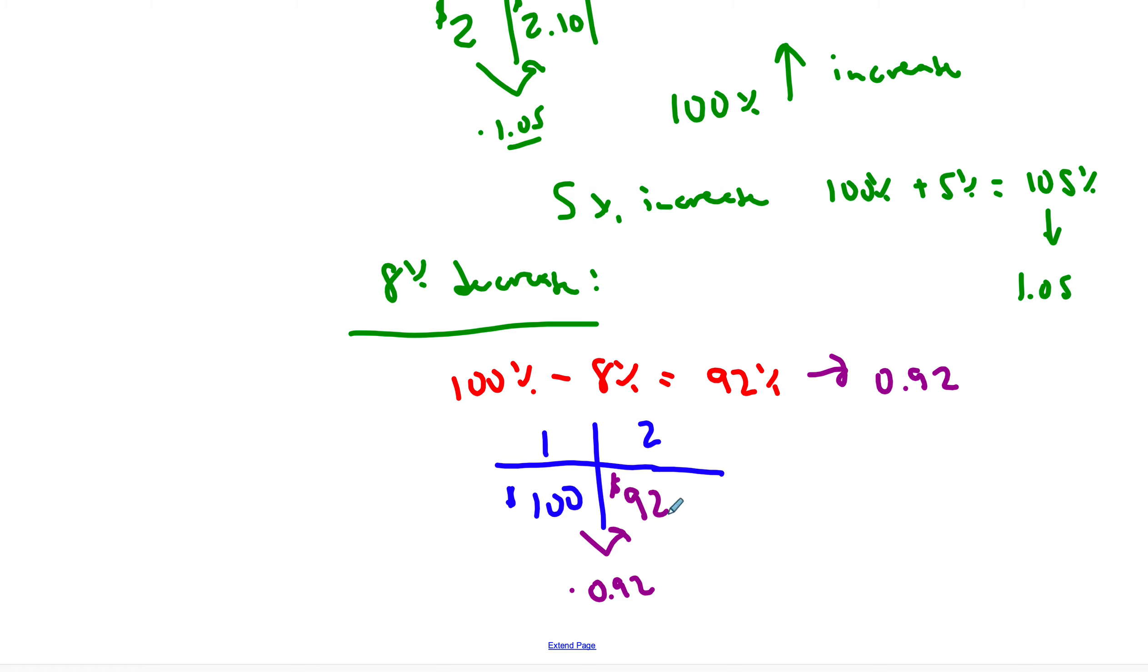So key things, convert to decimals, and everything starts at 100%. Increase, you add it, decrease, you take it away, all right? And whatever you're multiplying by is what you have after that, so the 92% is what remains, or the 105% is more, is what remains.